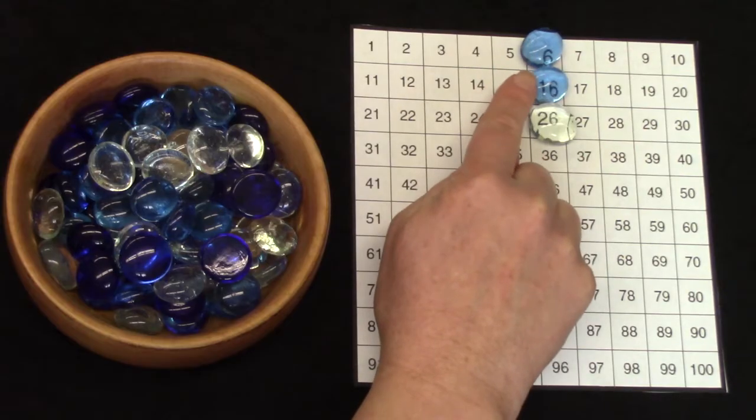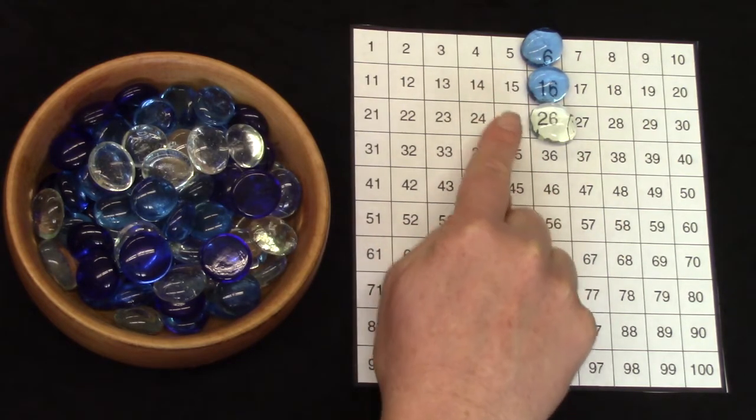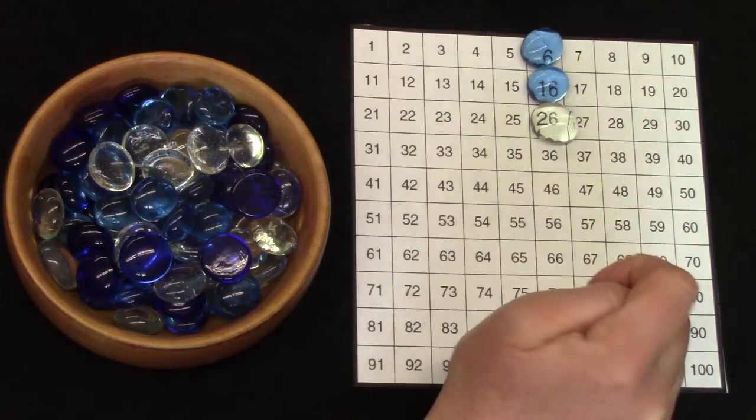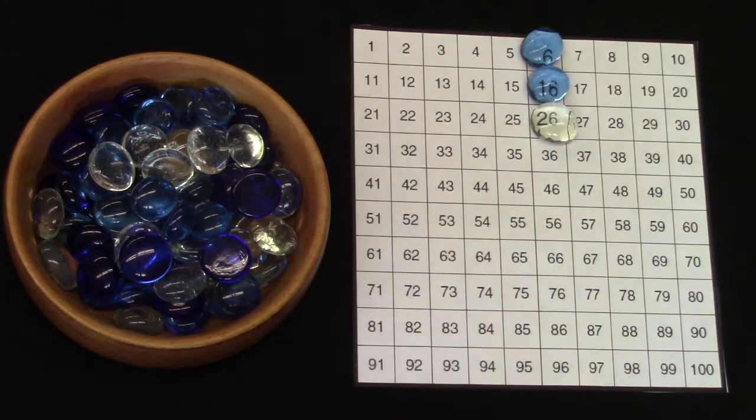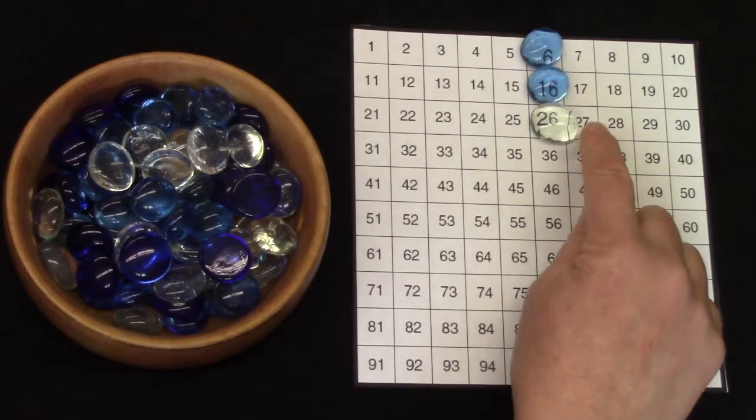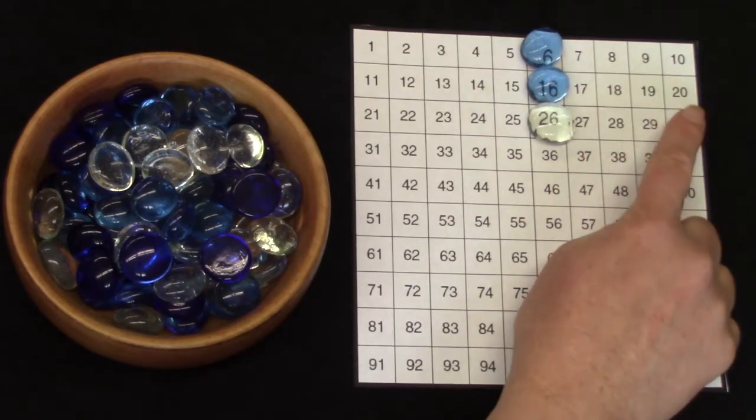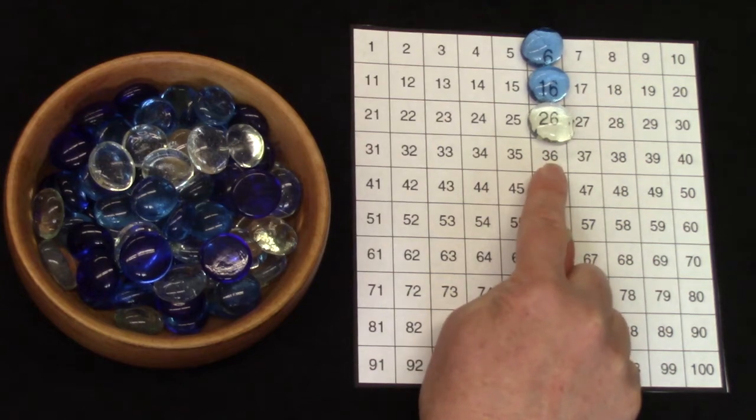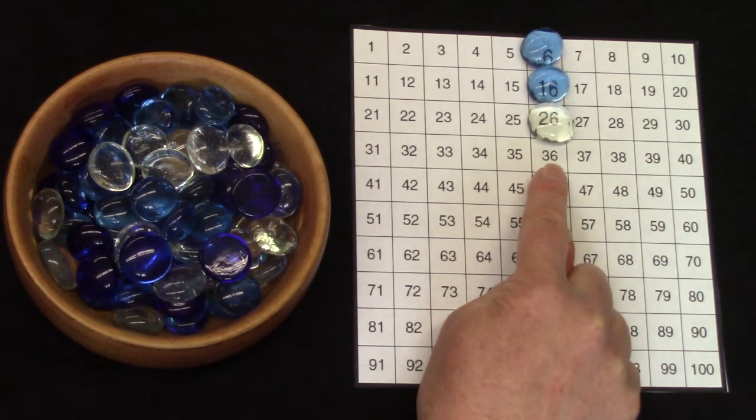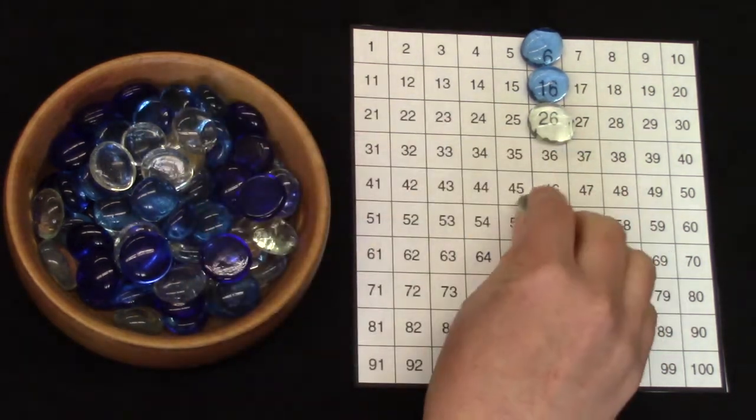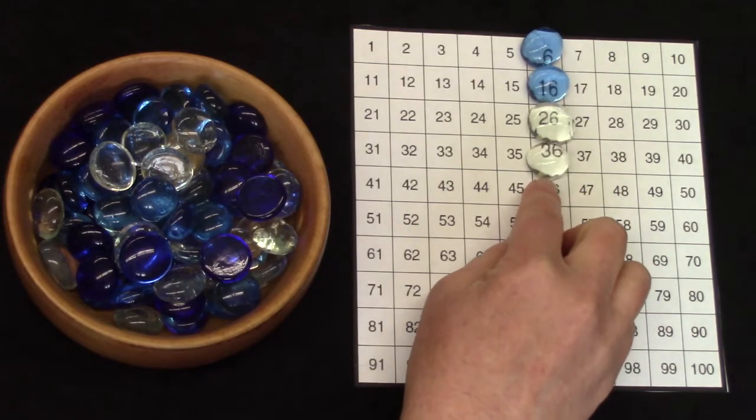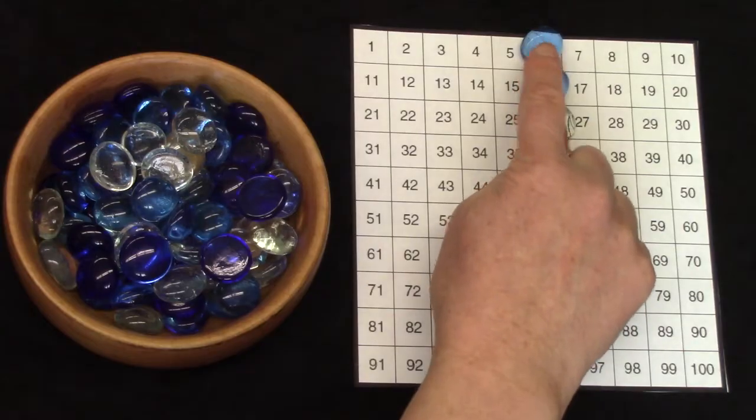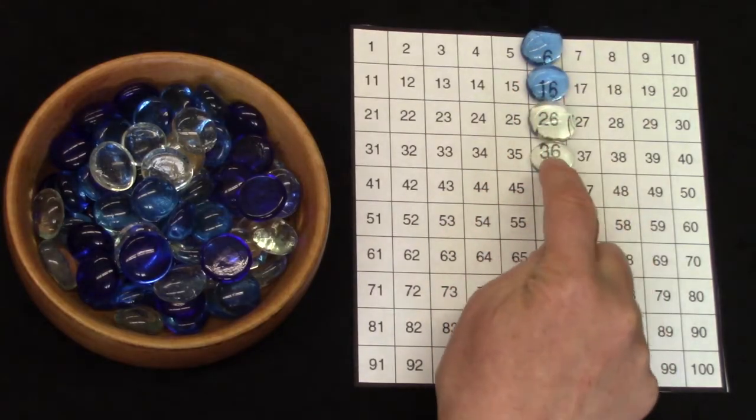6 plus 10 more is 16. 16 plus 10 more is 26. Well let's add 10 more to the number 26. Count with me: 1, 2, 3, 4, 5, 6, 7, 8, 9, 10. It's 36. I'm going to cover 36 with a pretty gem. So we have 6, 16, 26, and 36.